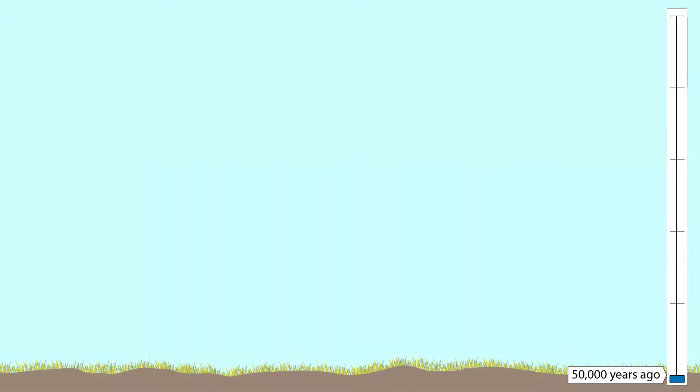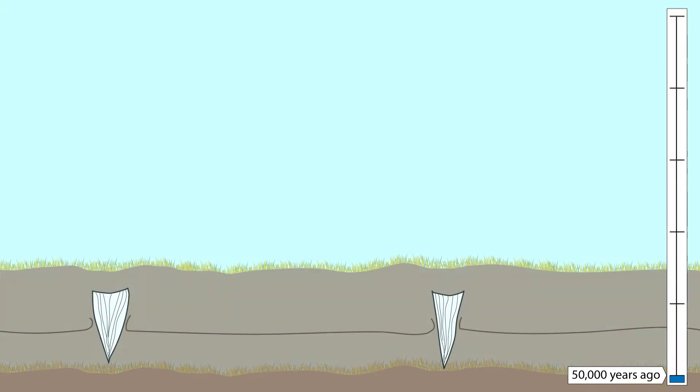At the time of the last ice age, interior Alaska was cold, windy, and dry. Permafrost was forming and ice wedges were growing within it.